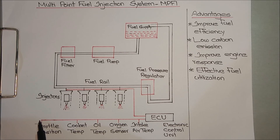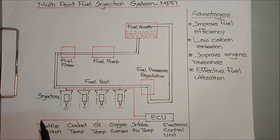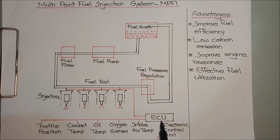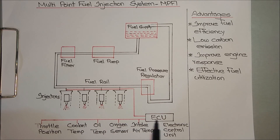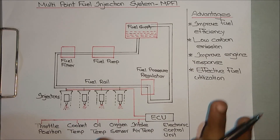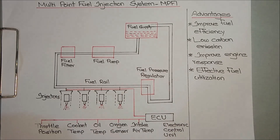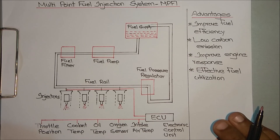There is a separate sensor to sense the throttle position, which gives information to the ECU. There is also a sensor to sense the coolant temperature and provide that information to the ECU. The ECU can control each and every fuel injector individually — so if you want to inject more fuel into a specific engine cylinder, the ECU can do that. That is how the schematic diagram of the multi-point fuel injection system works.